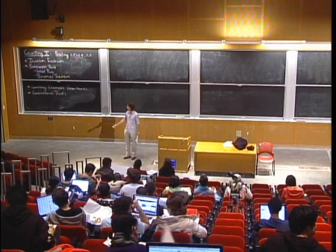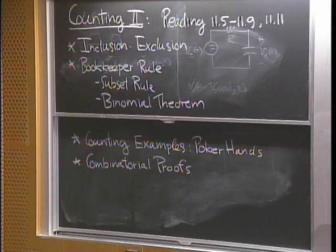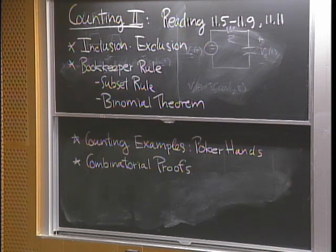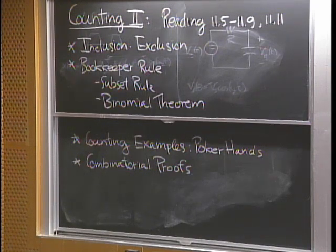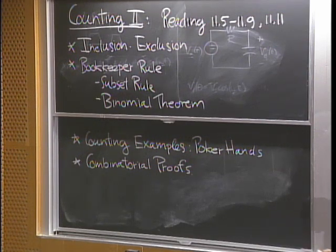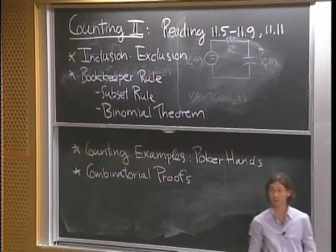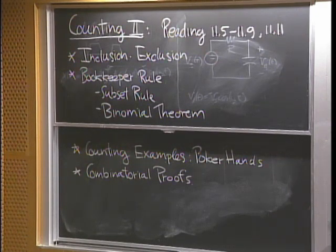We're going to talk about inclusion-exclusion, which is a generalization of what we did at the end of last lecture, which was about a sum rule. The inclusion-exclusion principle is very important, and the best way to explain this is by using Venn diagrams.